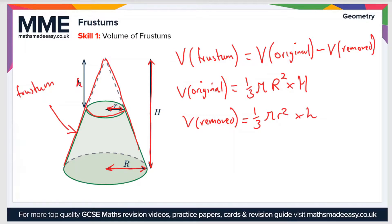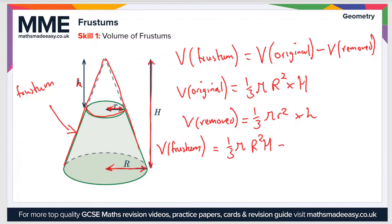Therefore the volume of the frustum is: one-third π R² H minus one-third π r² h, where capital R and capital H refer to the larger cone, and lowercase r and lowercase h refer to the smaller removed cone.